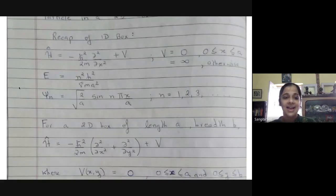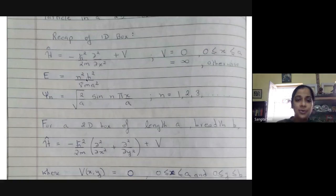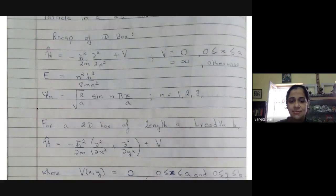The energy we found was quantized and a quantum number n was created from one of the boundary conditions. This tells us the allowed energy levels. We also get wave functions for each value of n, and these are found to be simple sine functions.